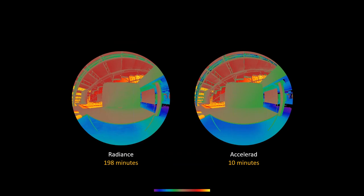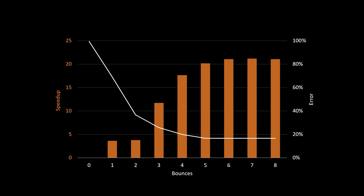Results: the Radiance image using irradiance caching took over three hours to simulate; using irradiance caching in Accelerad reduces that to ten minutes. As the number of bounces increases, the speedup increases and the error in the simulation result decreases to below the target value of 20%.